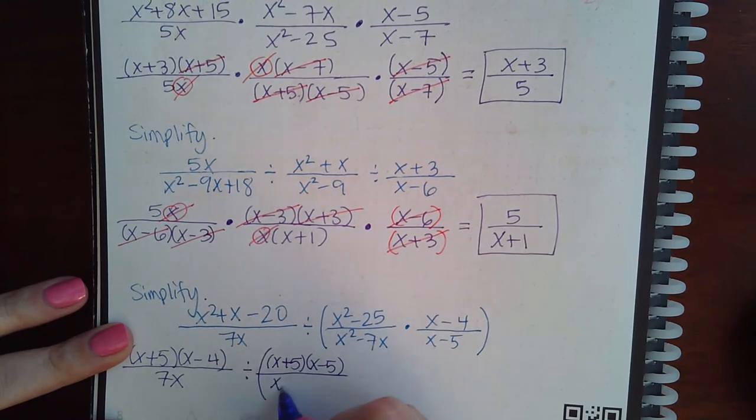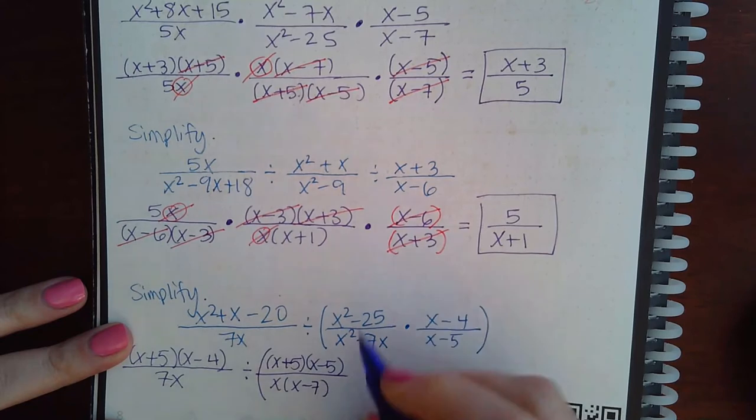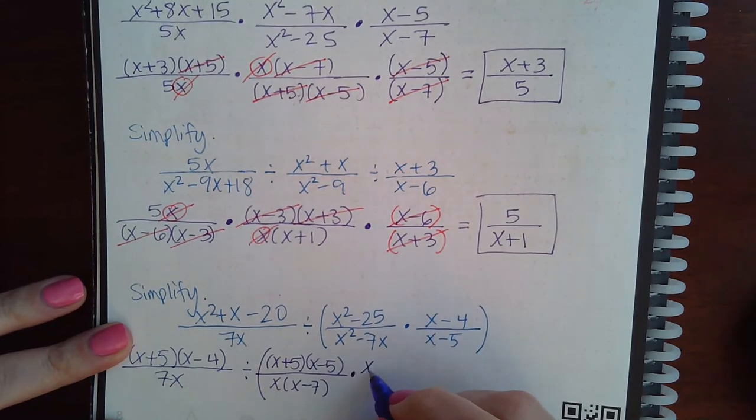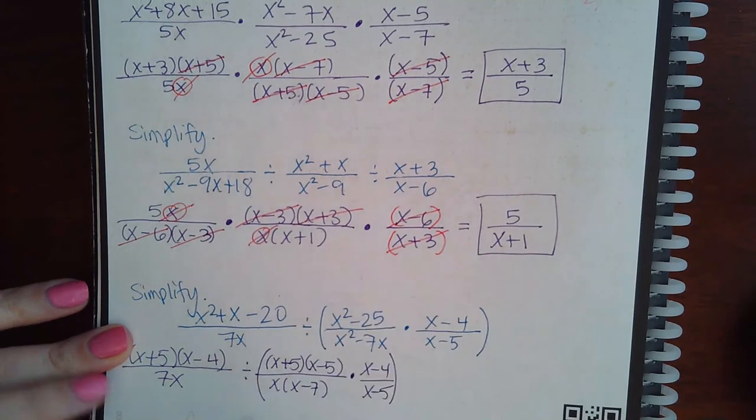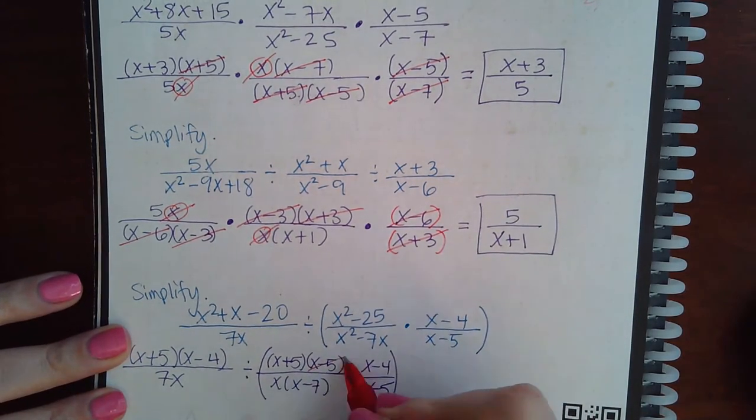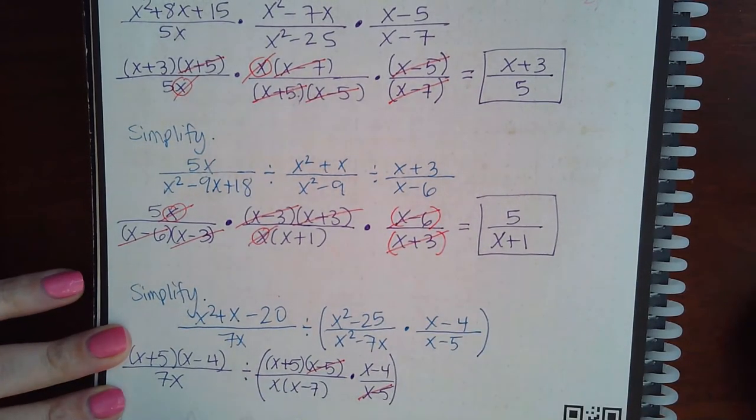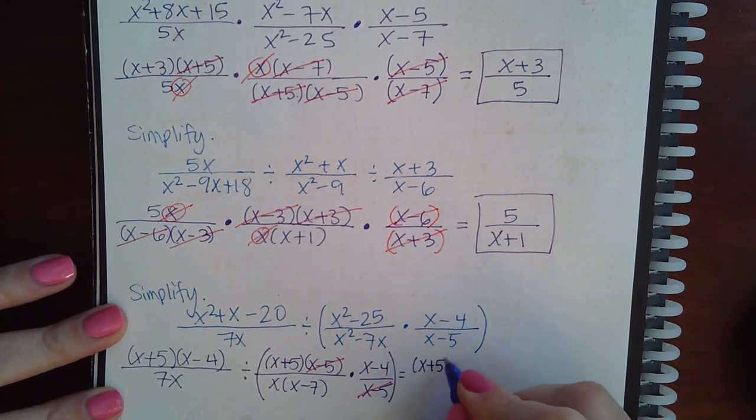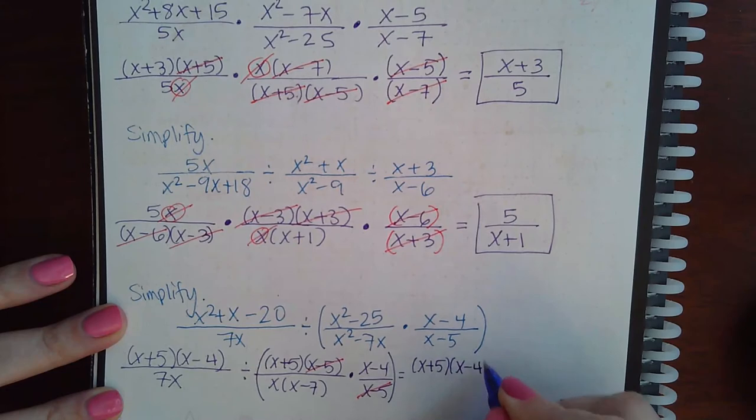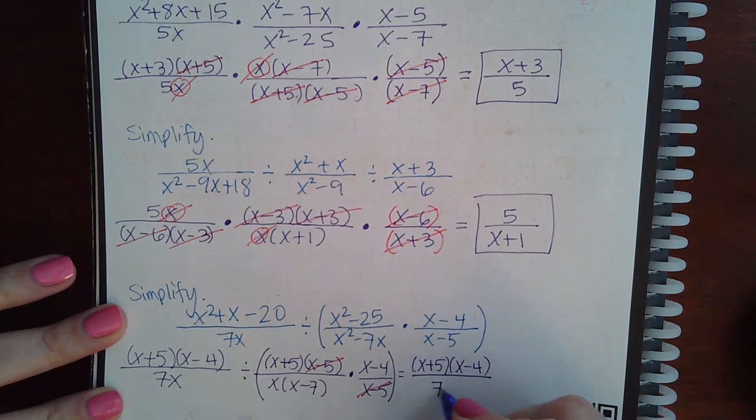Factor that. x minus 7 times x minus 4 x minus 5. So then this is going to cancel with this. But nothing else will cancel. So I end up with x plus 5 x minus 4 over 7x.